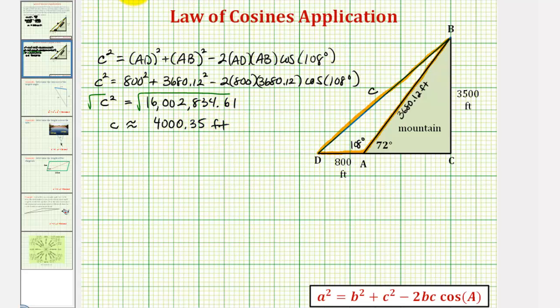Which is the shortest length of the cable needed for the cable car, which again is the length of side C. This is approximately 4,000.35 feet.